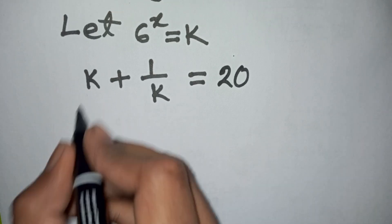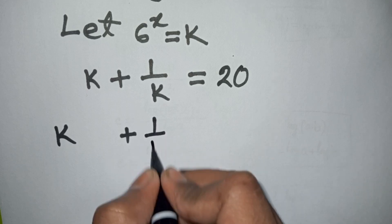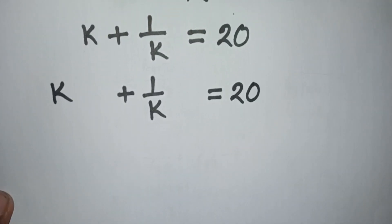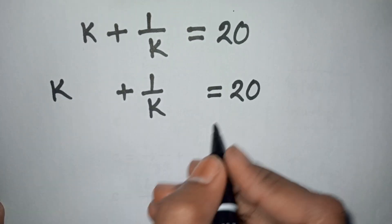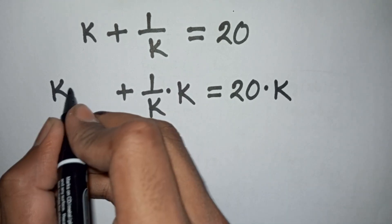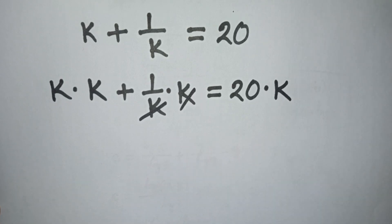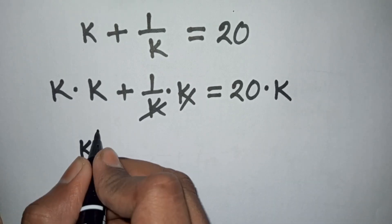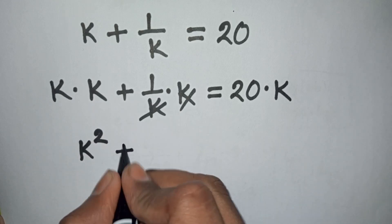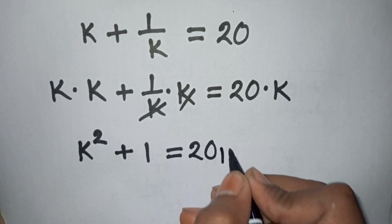We have k plus 1 over k is equal to 20. Now we multiply both sides by k. This k cancels, giving k times k, so it becomes k squared plus 1 equals 20k.